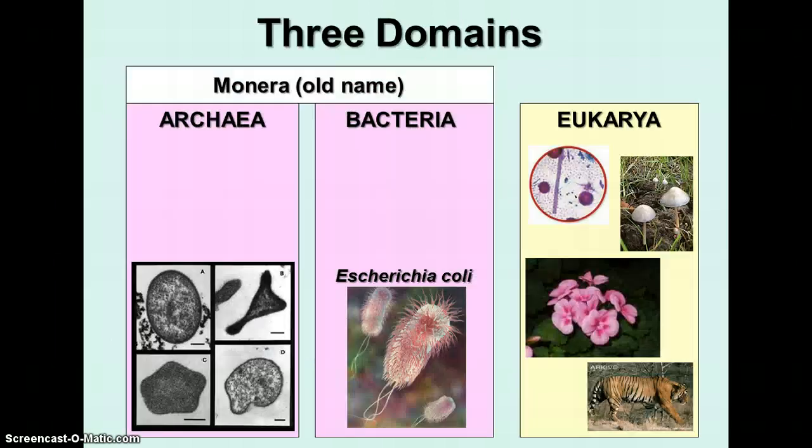There are three domains of living things. Two of them are strictly made of bacteria — the two domains of bacteria are Archaea and Bacteria. Up until the last 25 years or so, Archaea and Bacteria were classified together in the one kingdom called Monera. You will sometimes see in textbooks things referring to Monera or Monerans. Both of these are prokaryotes. The third domain is Eukarya, which includes Protista, Fungi, Plants, and Animals.